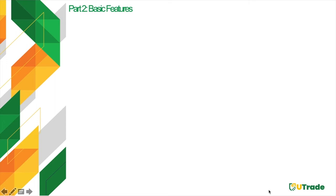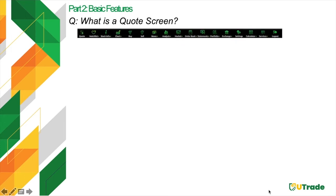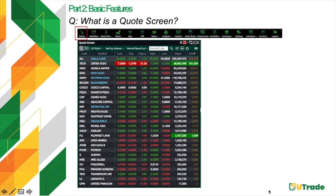Moving on to the basic features. The first basic feature is the quote screen. By default, the quote screen is located in the leftmost part of your trading hall. If you accidentally close the screen, you can access it again by clicking the quote icon. A quote screen is where you will see the list of all public companies' shares which can be traded in the local exchange. It also provides the performance overview of listed equities in a single trading day.